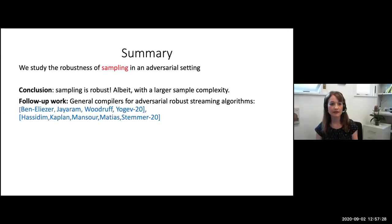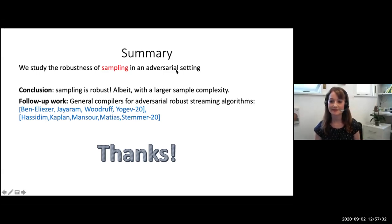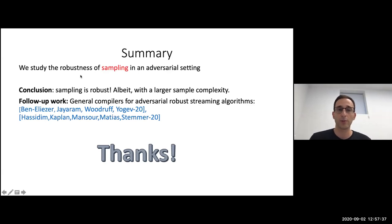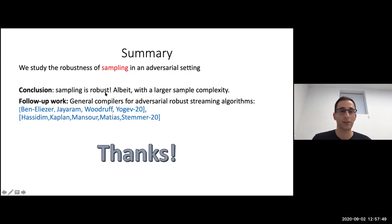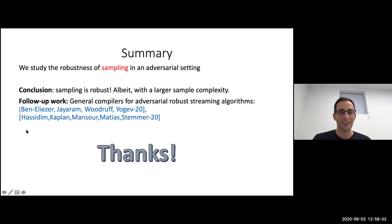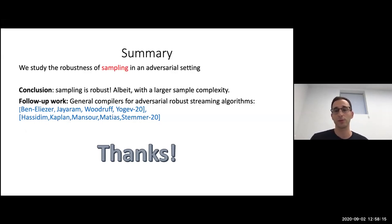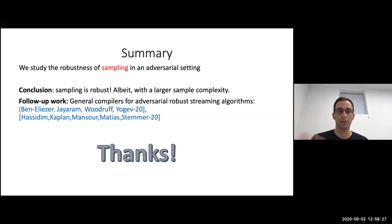To summarize: we talked about the robustness of sampling in the adversarial setting — like an adversarial version of Chernoff. The final conclusion is that sampling is robust, but you need a slightly larger sample complexity. There are two follow-up works — one I mentioned and one after — talking about general compilers for streaming algorithms, where you can take a streaming algorithm that works in the classical setting and compile it to work in the robust setting. These work on some cases but the general case is still wide open.